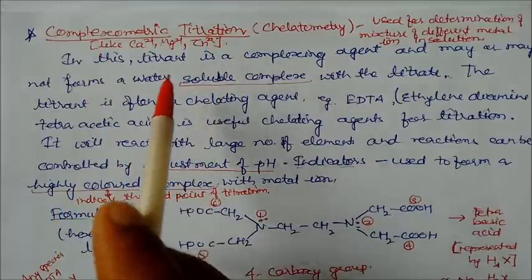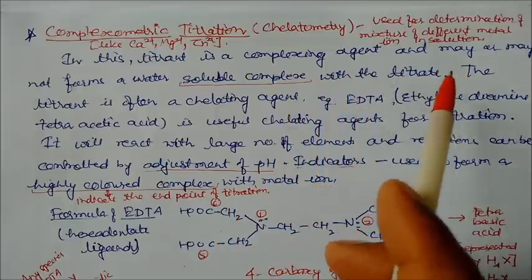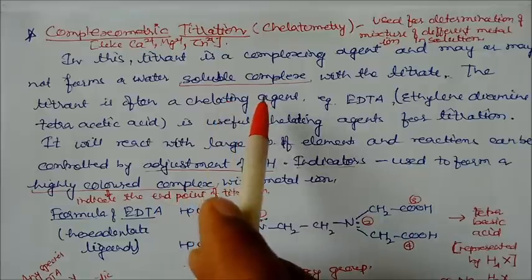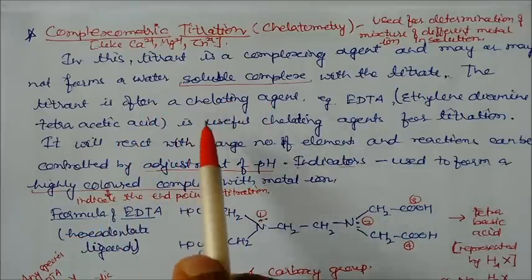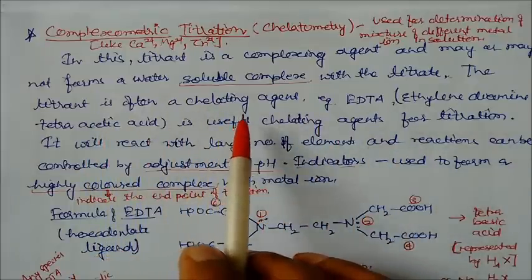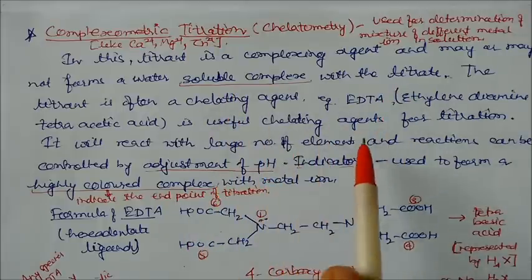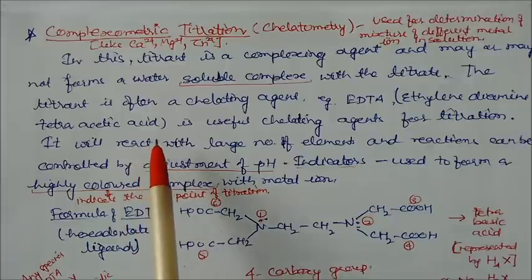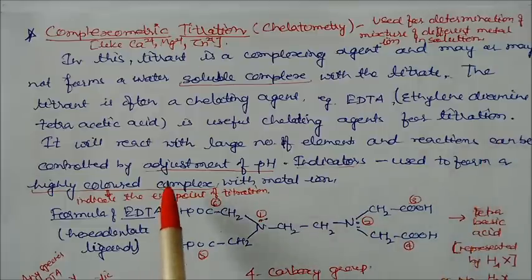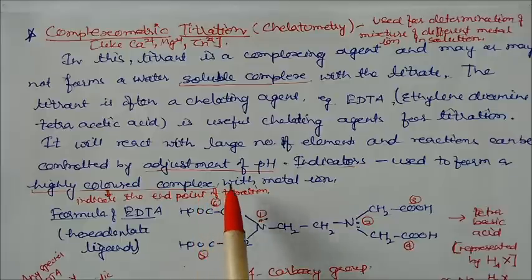These are basically transition metal ions. The titrant is a complexing agent and may or may not form a water-soluble complex with the titrate. The titrant is often a chelating agent, which forms a complex with the titrate. One example is EDTA - ethylene diamine tetra-acetic acid - which is very useful as a chelating agent for titrations.